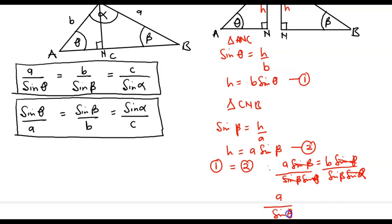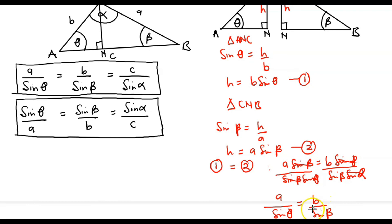So we are left with A divided by sine of theta, equal to B divided by sine of beta. We have therefore proved that the ratio between side A and the sine of its corresponding angle is equal to the ratio between side B and the sine of its corresponding angle. It follows that we can bring in the third side: C divided by sine of its corresponding angle alpha, completing the full Sine Rule.